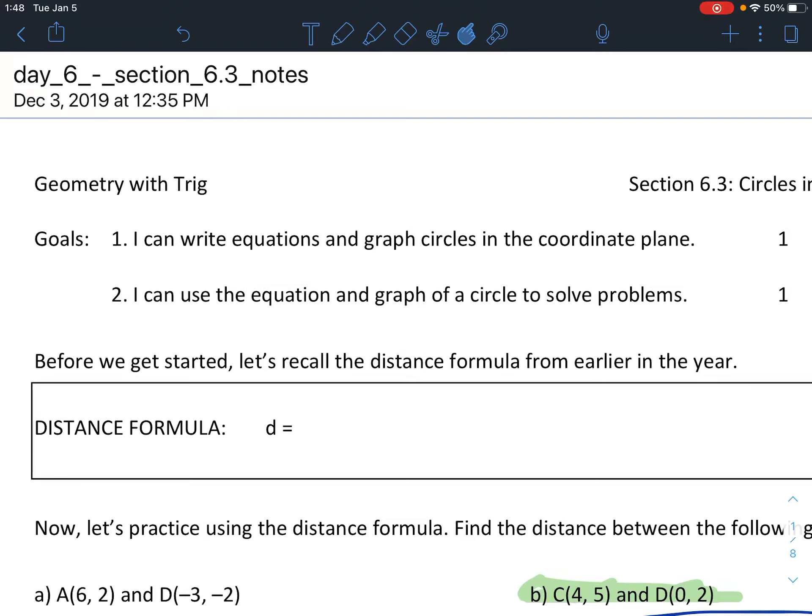All right, our final section in chapter 6, 6.3 is called circles and the coordinate plane. Before we get started, let's recall the distance formula from earlier in the year, I think chapter 1. The distance between two points in a coordinate plane is written as distance equals big square root sign x minus x squared plus y minus y squared.